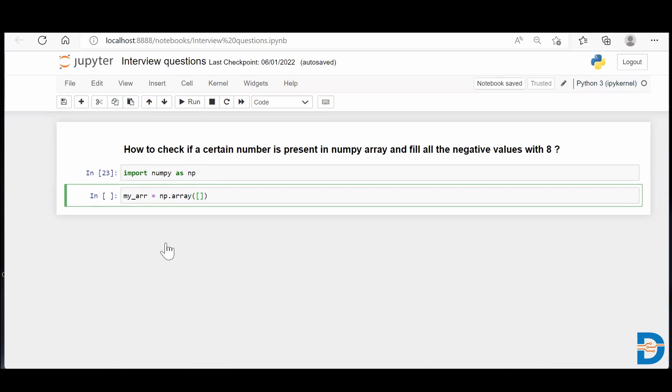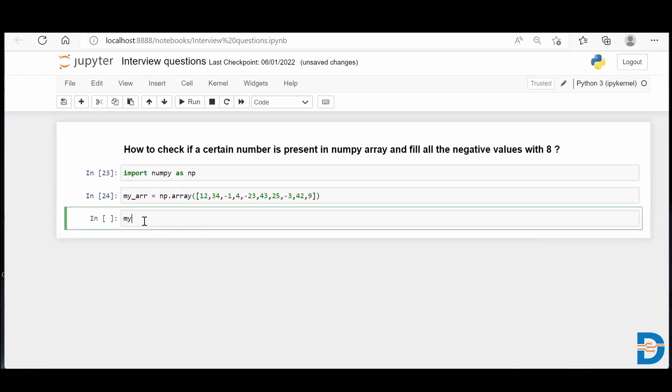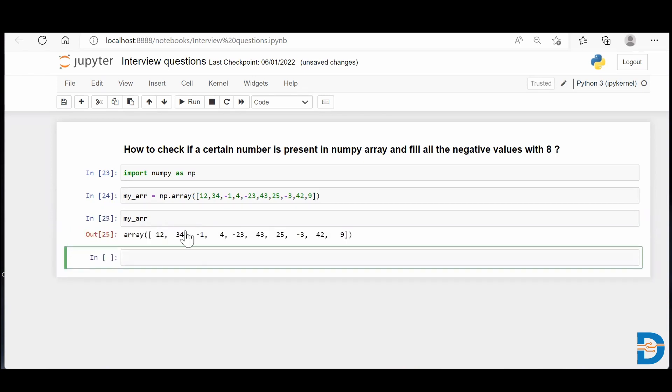And inside of it, I'm going to put some random numbers and deliberately I'll add some negative numbers here as well. So I have created a single dimension NumPy array, and it is having negative numbers over here as well.